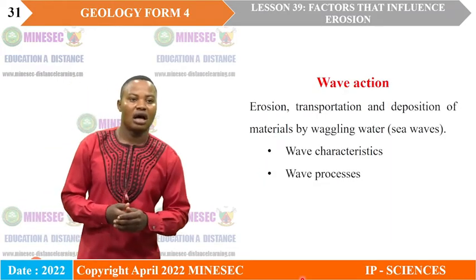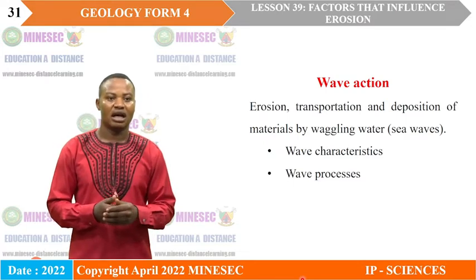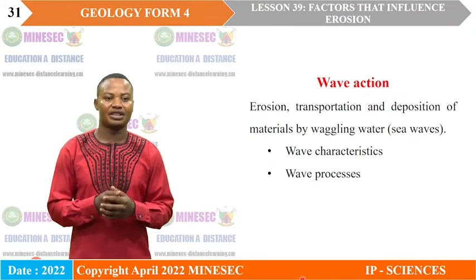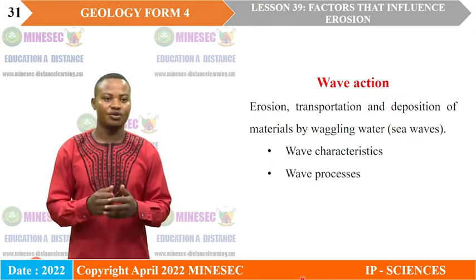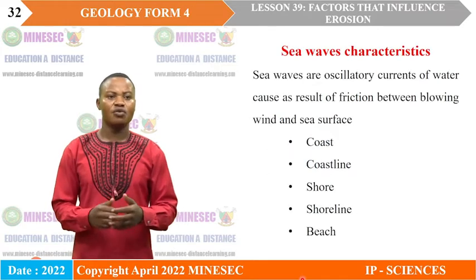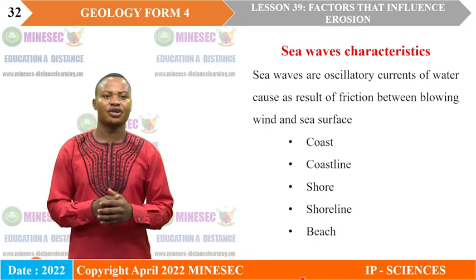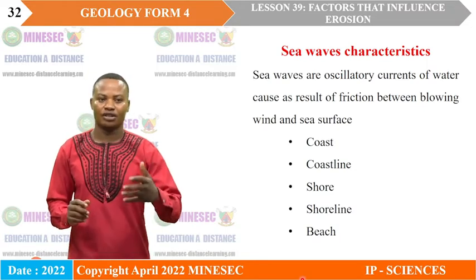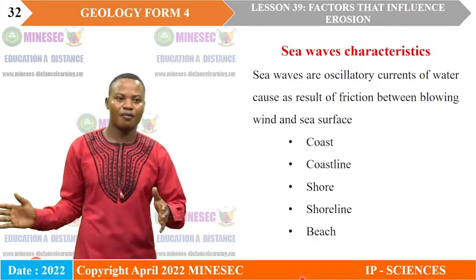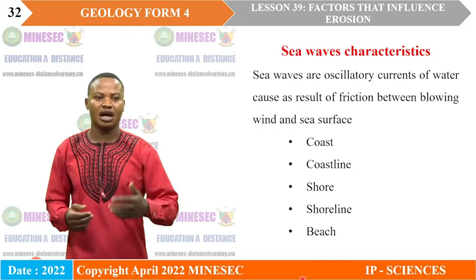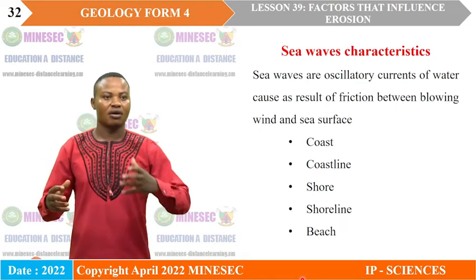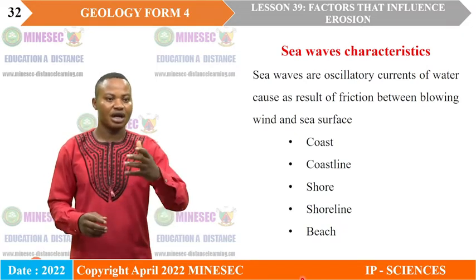Wave actions are common in marine environments and equally undergo erosion, transportation, and deposition of materials by the action of sea waves. Sea waves are oscillatory currents of water caused by friction between blowing wind and the water surface. When wind blows, friction between the wind and the water surface generates movement of water in the form of oscillatory currents that we call sea waves.